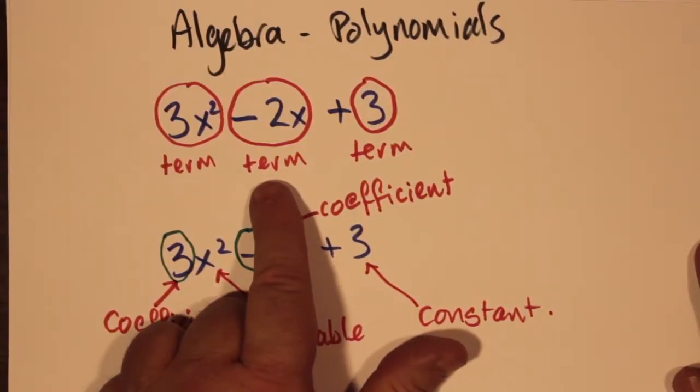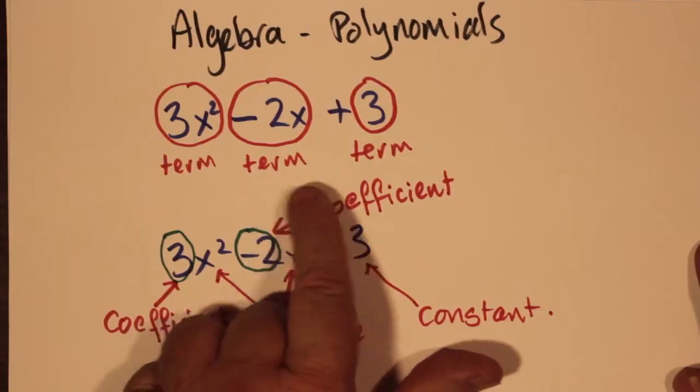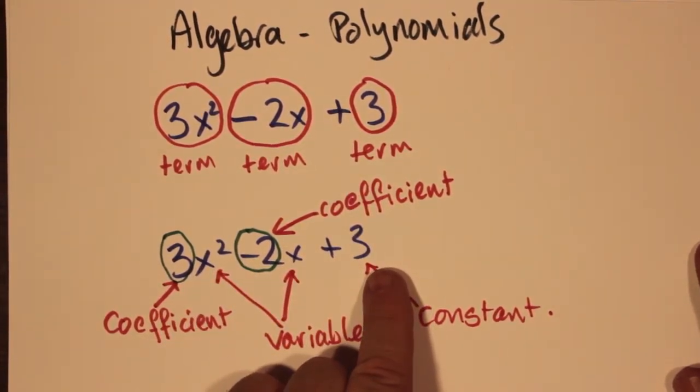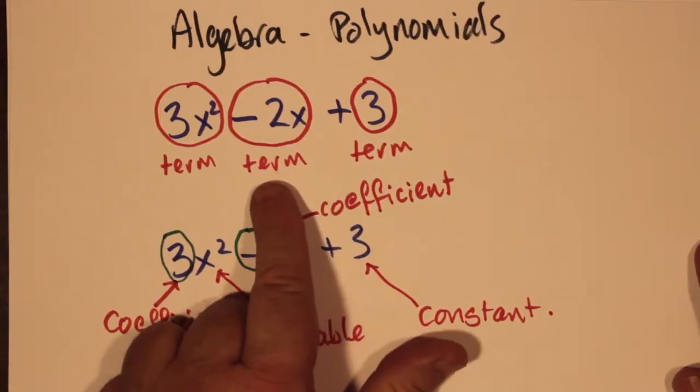The -2x part is also an example of a term. In other words, the term doesn't have to have an x², it could just have an x. And we have a +3, also called a term. Notice that these terms are separated by plus and minus signs, and I have the circle for the -2x including the negative sign because the minus sign would be considered part of the term, indicating that the -2 coefficient is negative.